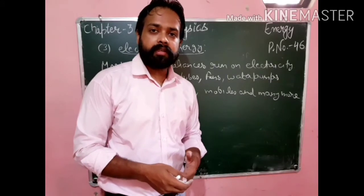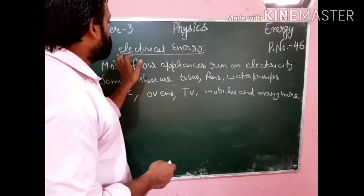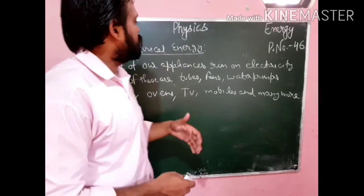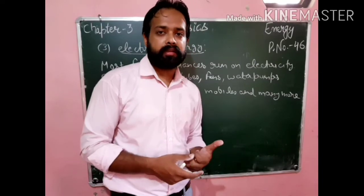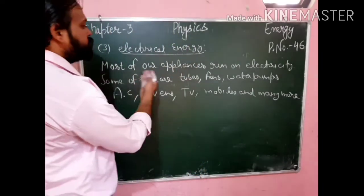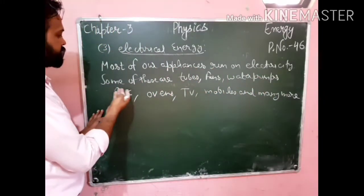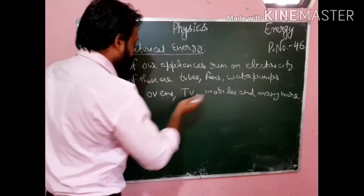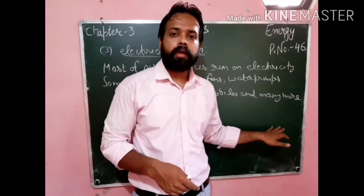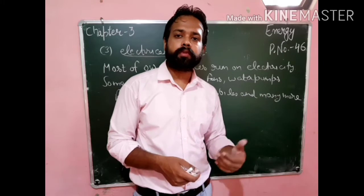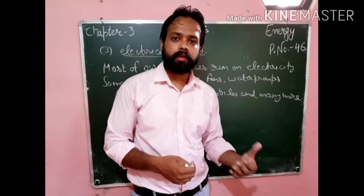The next form of energy is electrical energy. As is clear from the name, the energy we get from electricity is called electrical energy. Most of our appliances run on electricity — for example: tubes, fans, water pumps, AC, ovens, TVs, mobiles, and many more things which work with the help of electricity. This is the third form — electrical energy.